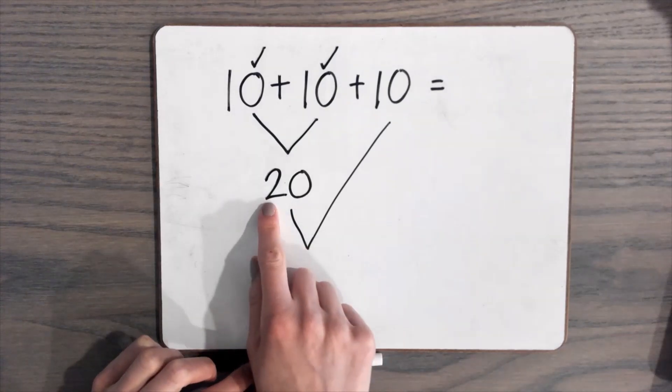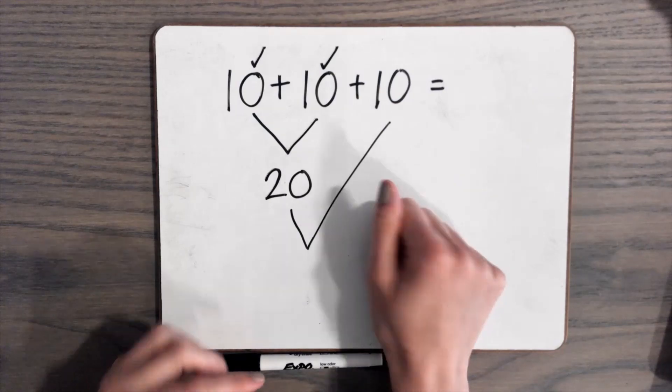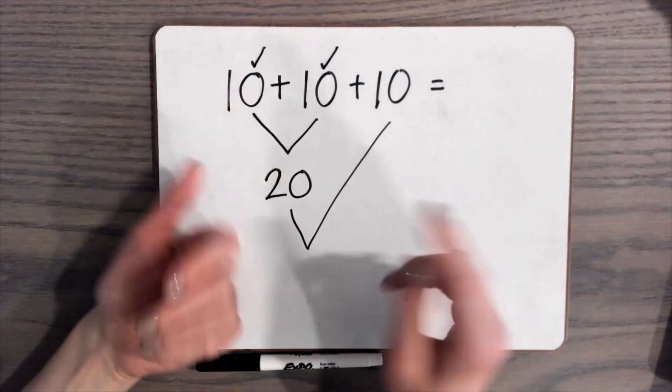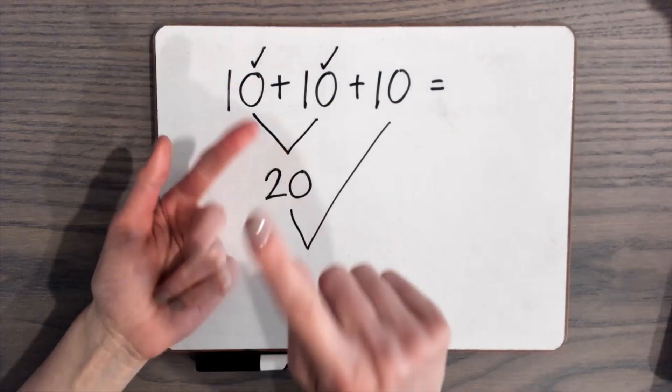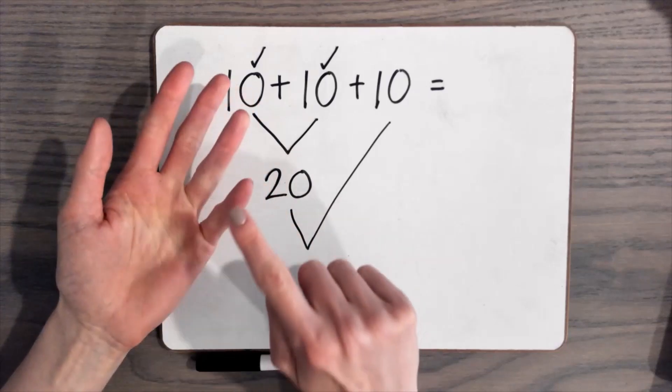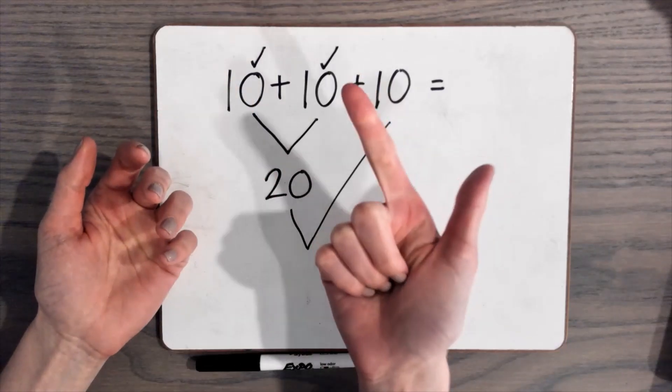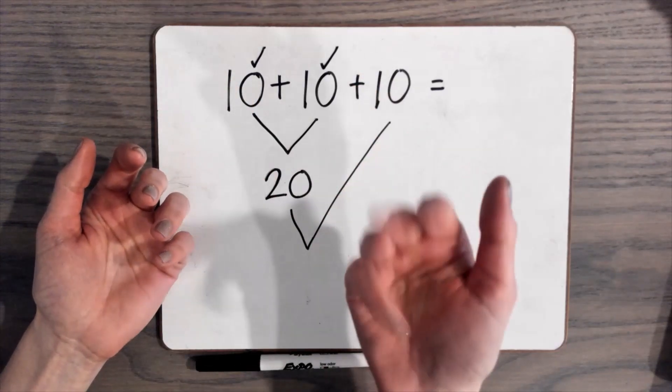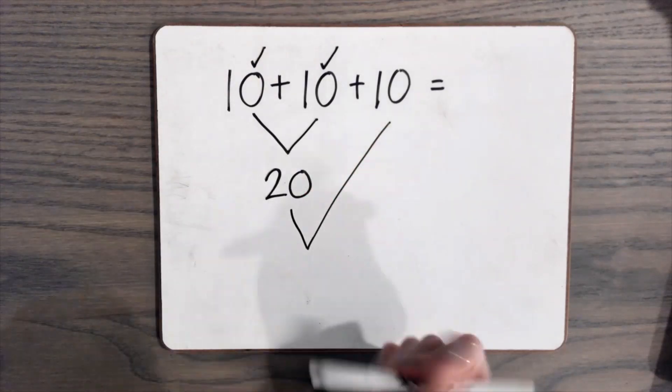Put 20 in your head, so 20, and then count 10 more. 21, 22, 23, 24, 25, 26, 27, 28, 29, 30. So we get 30.